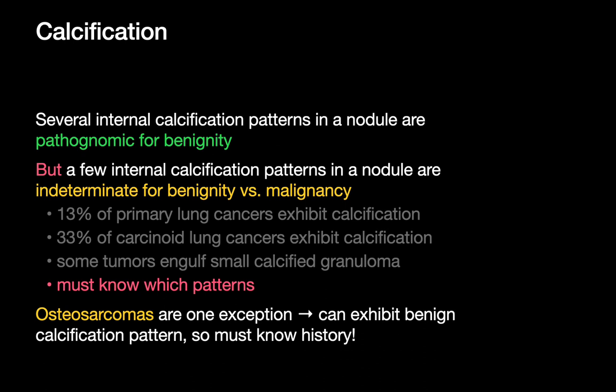Calcification is our next topic. There are internal calcification patterns within a nodule that are pathognomonic for benignity. However, there are also patterns that are indeterminate — not pathognomonic, but indeterminate for benignity versus malignancy. These indeterminate patterns are important because we cannot sign these nodules off as benign on first observation. One last note: be aware of osteosarcomas — they are one malignancy that can exhibit a benign calcification pattern, so it's important to know the patient's history. You don't want to be calling an osteosarcoma a calcified granuloma.